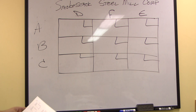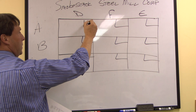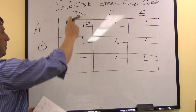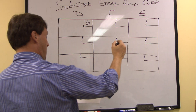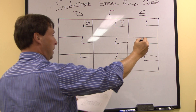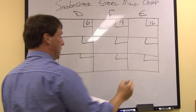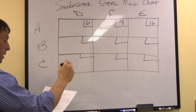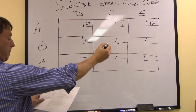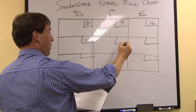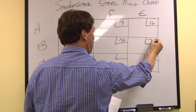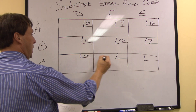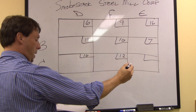We take the shipping cost per unit. It's $6 from Anaheim to Detroit, $9 from Anaheim to Fort Worth, and $16 to Elizabeth. For Birmingham to Detroit it is $11, Birmingham to Fort Worth is $10, and $7 to Elizabeth. And finally we have $16, $12, and $10 for Cleveland.